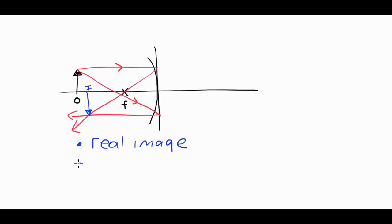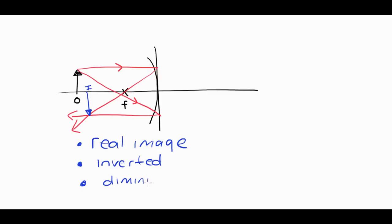The fact that the arrowhead is upside down and underneath the principal axis shows that the image is inverted, or upside down. And finally, the image is diminished — smaller than the object. You can tell because the image is closer to the mirror than the object was. If it were in the same location as the object it would be the same size, and anything beyond would be magnified. So those are the three things you describe in terms of the nature of the image.